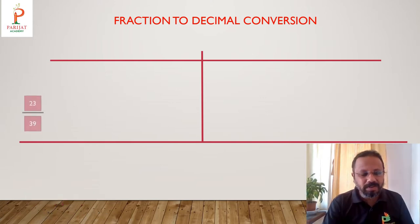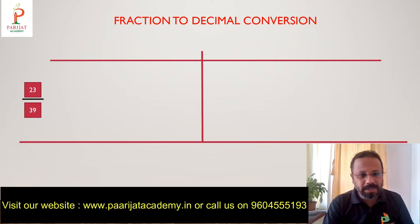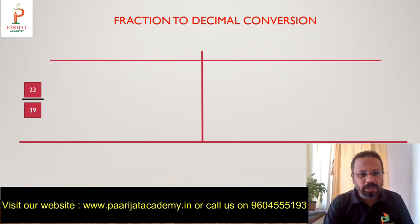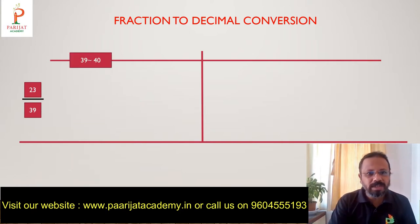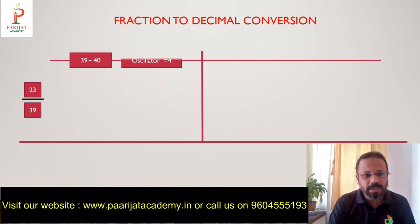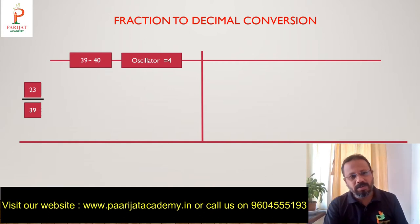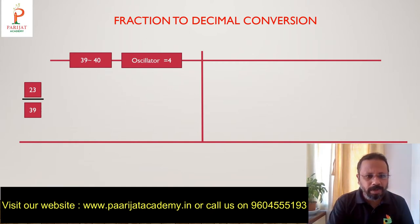Let's learn with the fraction 23 upon 39, which is a difficult fraction by the school method, but we will convert it into a simple fraction. First, we need to find the osculator using the osculation method. The denominator is 39; the nearest round figure is 40, so 4 is called the osculator. We will use 4 as the denominator going forward.